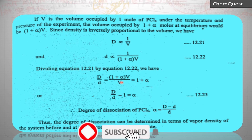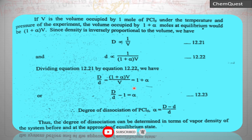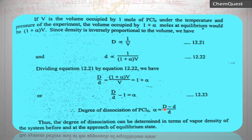From D/d = 1 + α, rearranging gives D/d − 1 = α, so the degree of dissociation α = (D − d) / d. This means we can determine the degree of dissociation in terms of the vapor density of the system before and at the approach of equilibrium. By substituting the values of capital D and small d into this equation, we can find alpha.